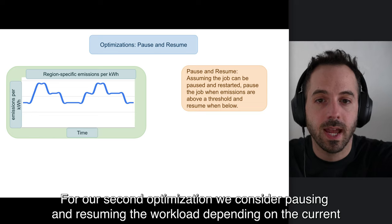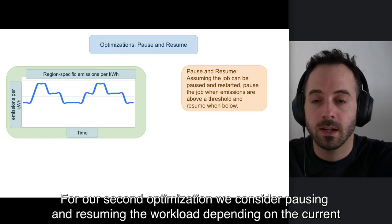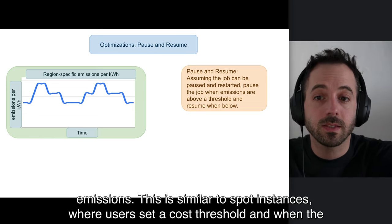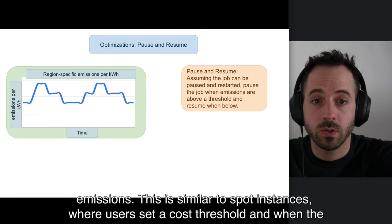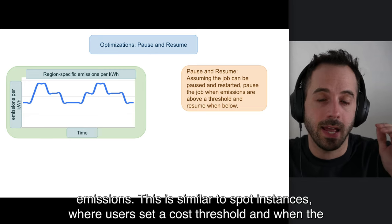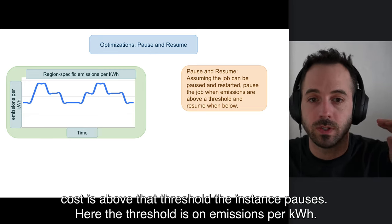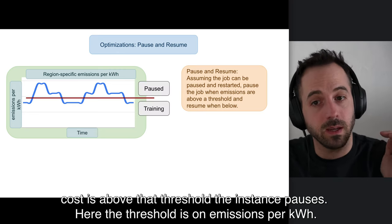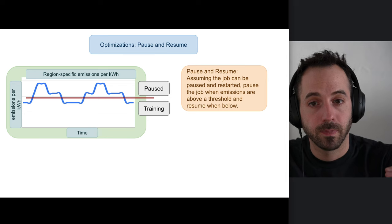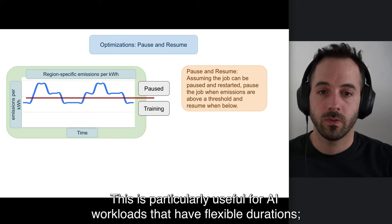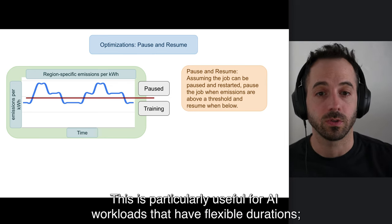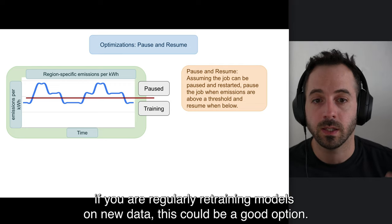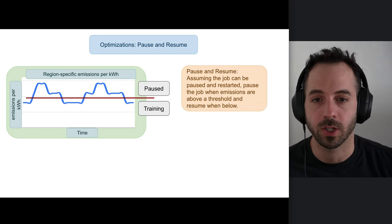For our second optimization, we consider pausing and resuming the workload depending on the current emissions. This is similar to spot instances where users set a cost threshold and when the cost goes above that threshold, the instance pauses. Here, the threshold is on the emissions per kilowatt hour. This is particularly useful for AI workloads that have flexible durations. If you're regularly retraining models on new data, this could be a good option.